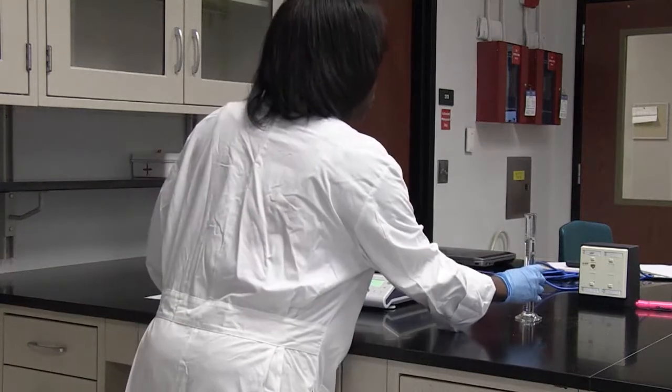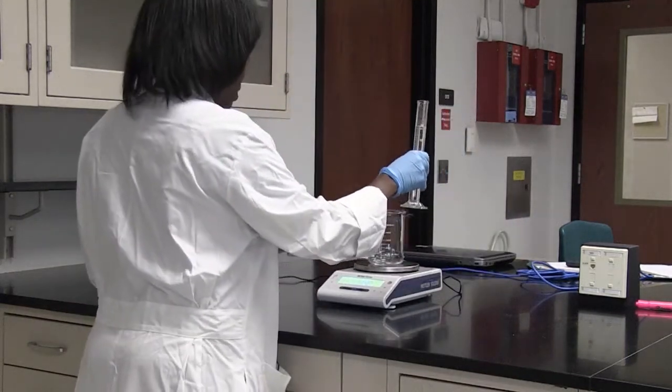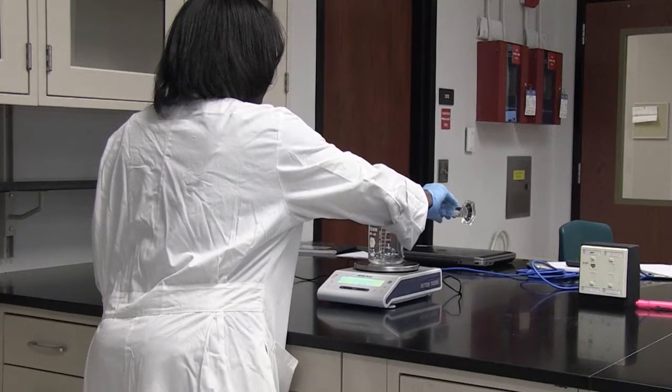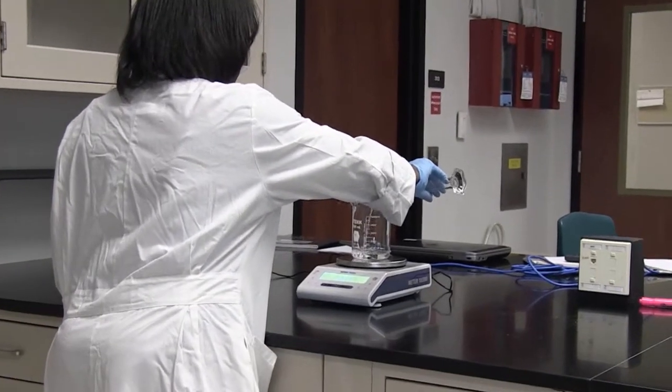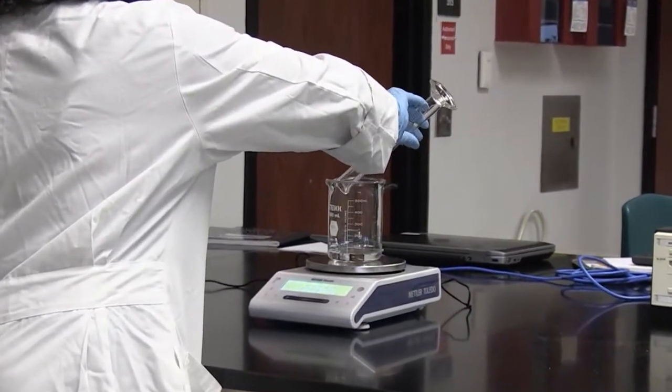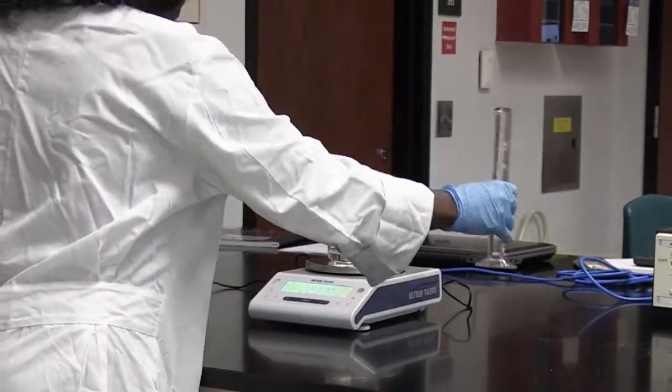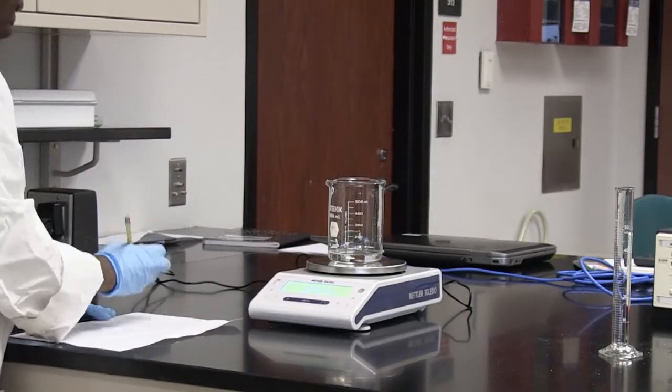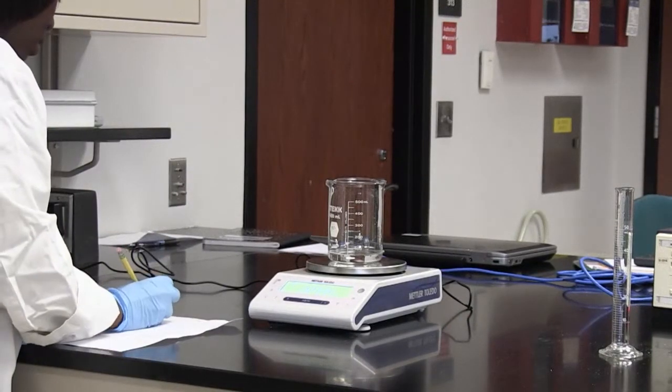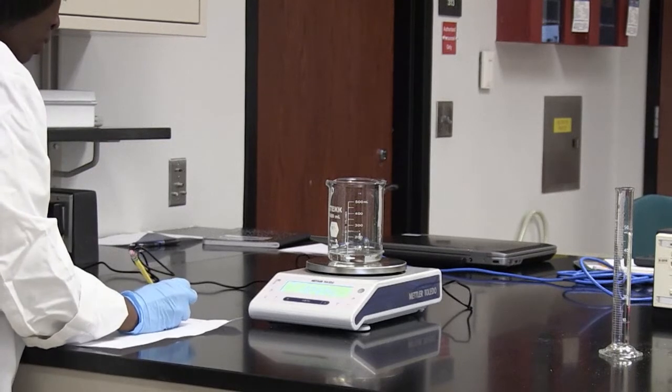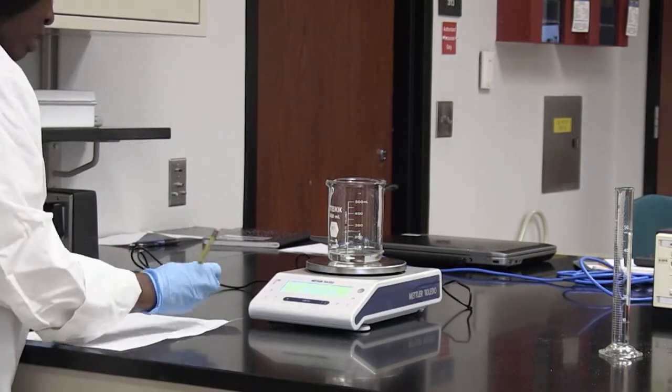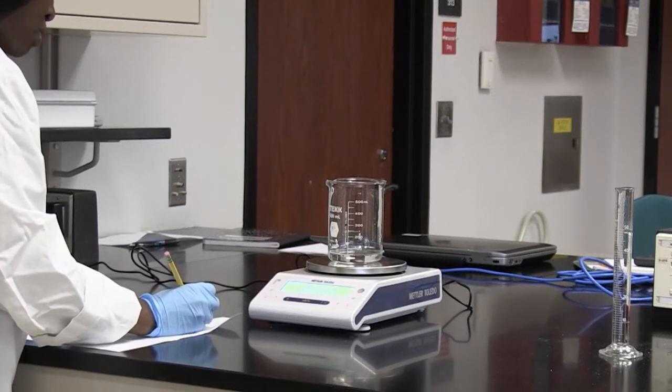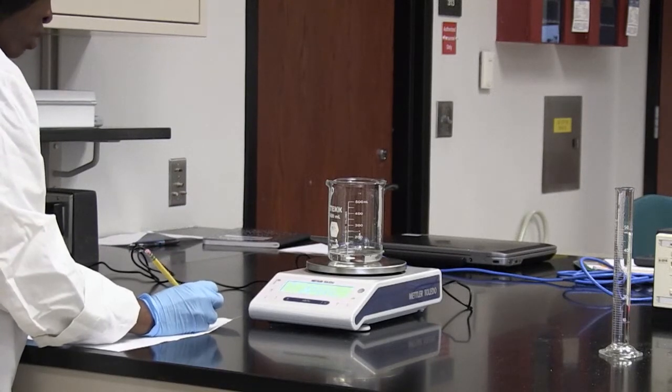Then I'm going to pour 50 milliliters of water into my beaker. And then I'm going to determine that weight. So the mass of the beaker plus water is actually 223.33 grams.